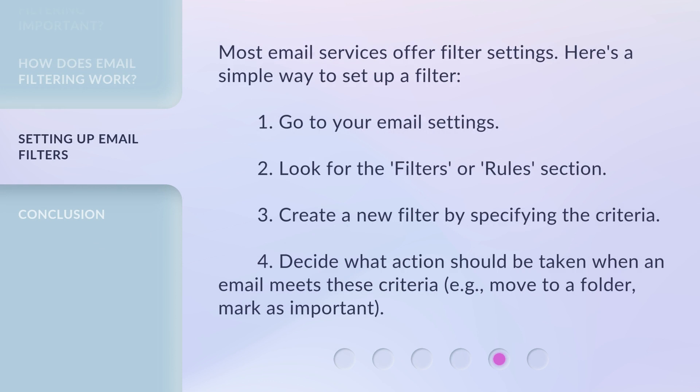Most email services offer filter settings. Here's a simple way to set up a filter: 1. Go to your email settings. 2. Look for the Filters or Rules section. 3. Create a new filter by specifying the criteria. 4. Decide what action should be taken when an email meets these criteria. 5. Move to a folder, or mark as important.